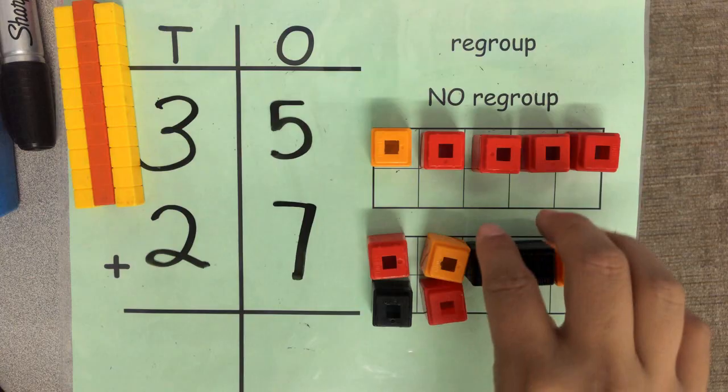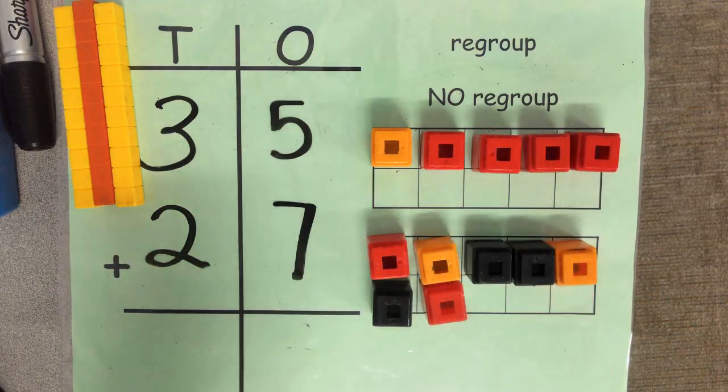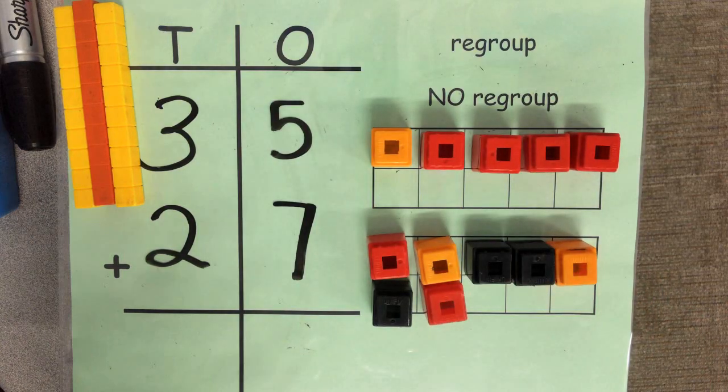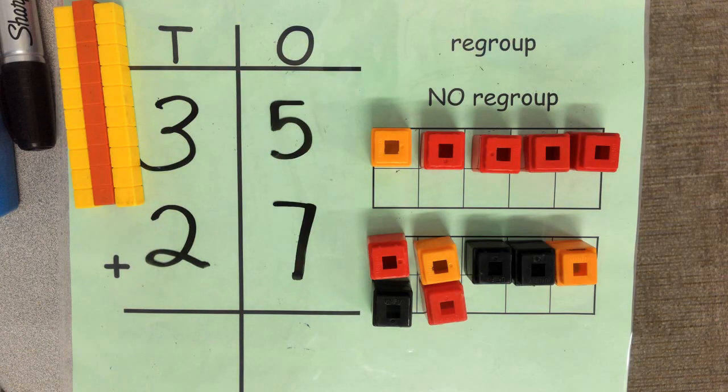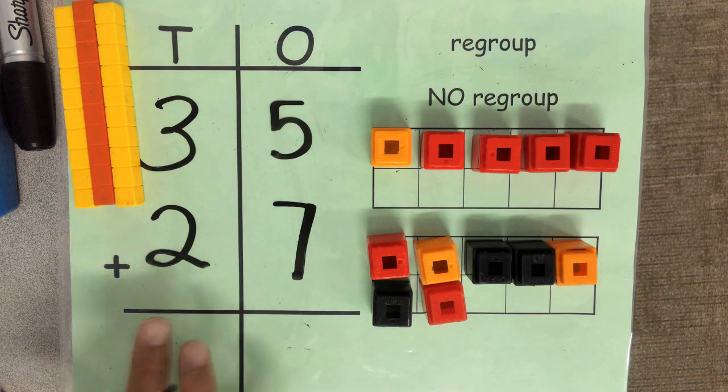So let's just keep that in mind. Now how many tens can you make at the bottom? Two, two groups of ten.